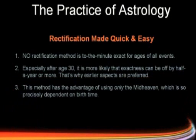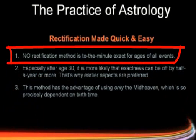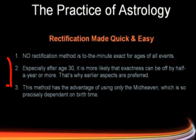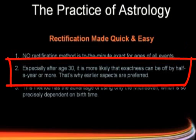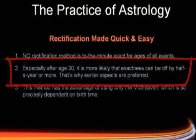I just want to remind you: no rectification is to the minute exact for ages of all events — it just doesn't happen. Especially after the age of 30, it is more likely the exactness can be off by half a year or more. That's why earlier aspects are preferred.